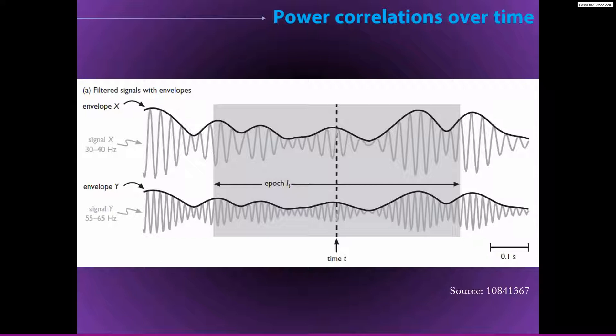So this is already a little bit different from phase synchronization, which we talked about previously, where generally you have to filter the data from different signals in exactly the same frequency. With power correlations, you have a lot more flexibility to specify the time frequency characteristics that you want. This is one method of computing cross-frequency couplings, power-power correlations over different frequency bands.